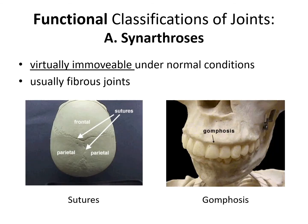Let's start by looking at categories based on function — the amount of movement. First, 'arthro' means joint. Think of arthritis, which literally means an inflammation of a joint. Think of arthropod — arthropods are things like insects, millipedes, and crustaceans that have jointed legs. Arthropod literally means jointed leg.